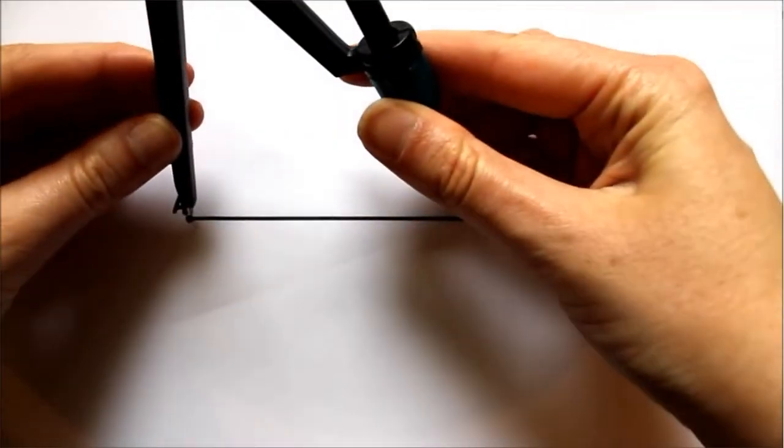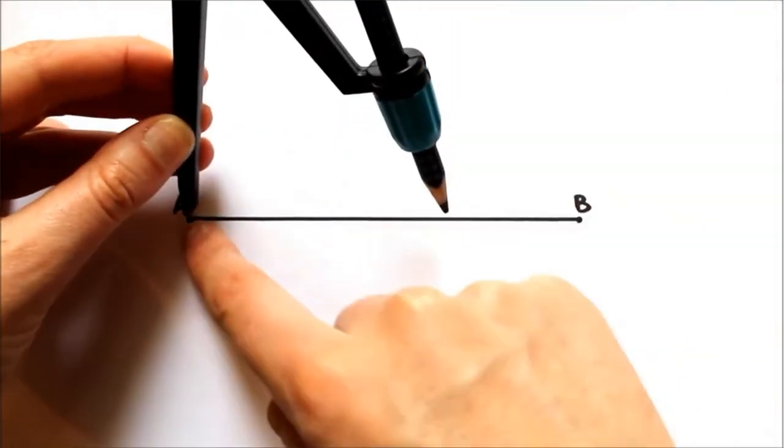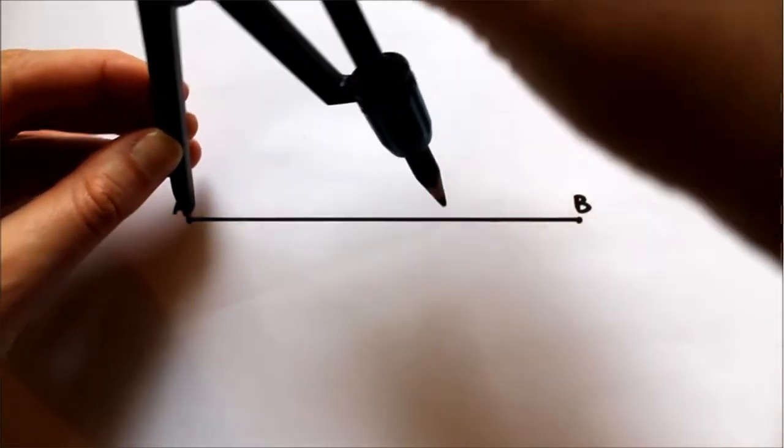So the first thing we do is we put the compass point at point A. We measure a distance that's just a little bit more than half, and then we draw our two arcs.